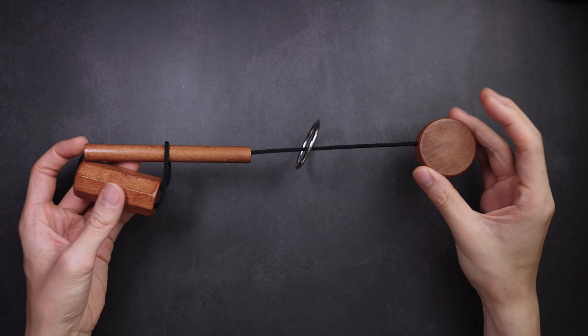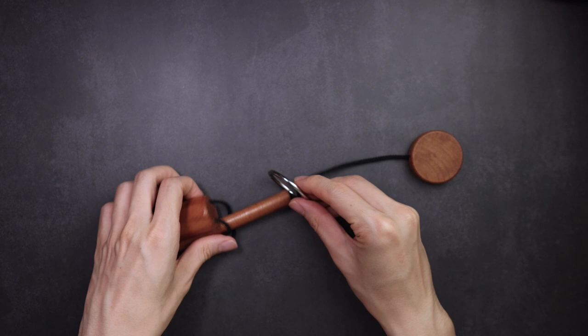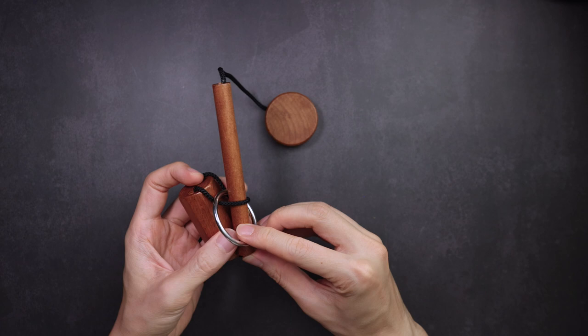The goal is to remove the metal ring from the puzzle. The ring cannot pass through the wooden disc like this, obviously. Essentially, this is a rope puzzle, which means we need to manipulate the rope in some particular way to create a path for the ring to travel out of the system.